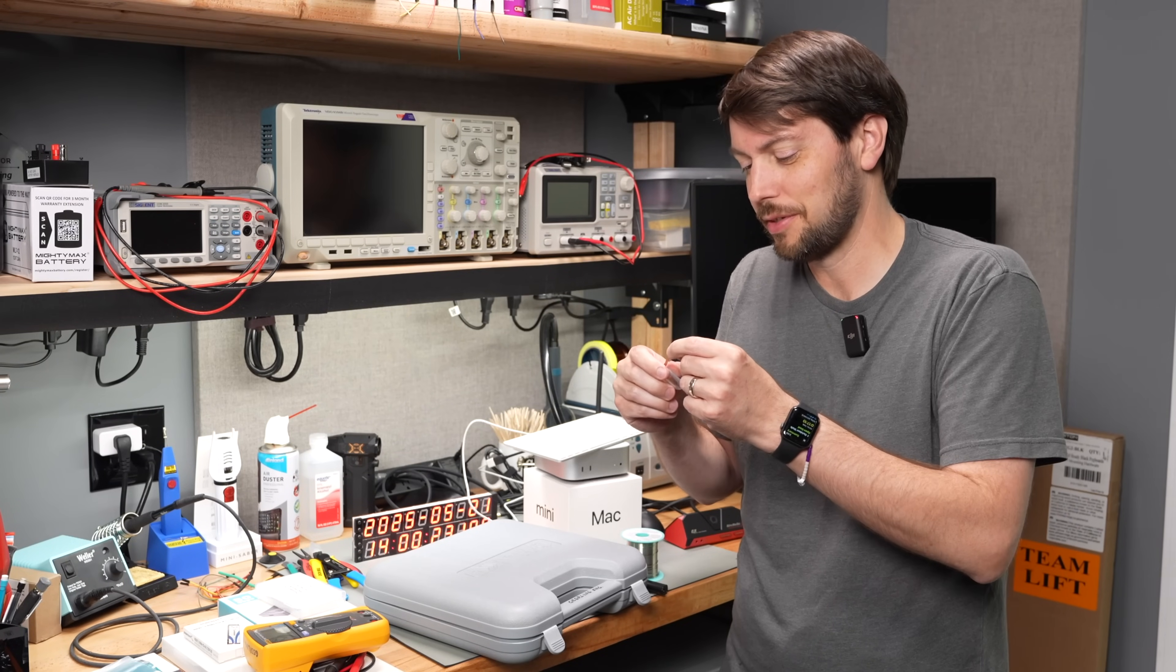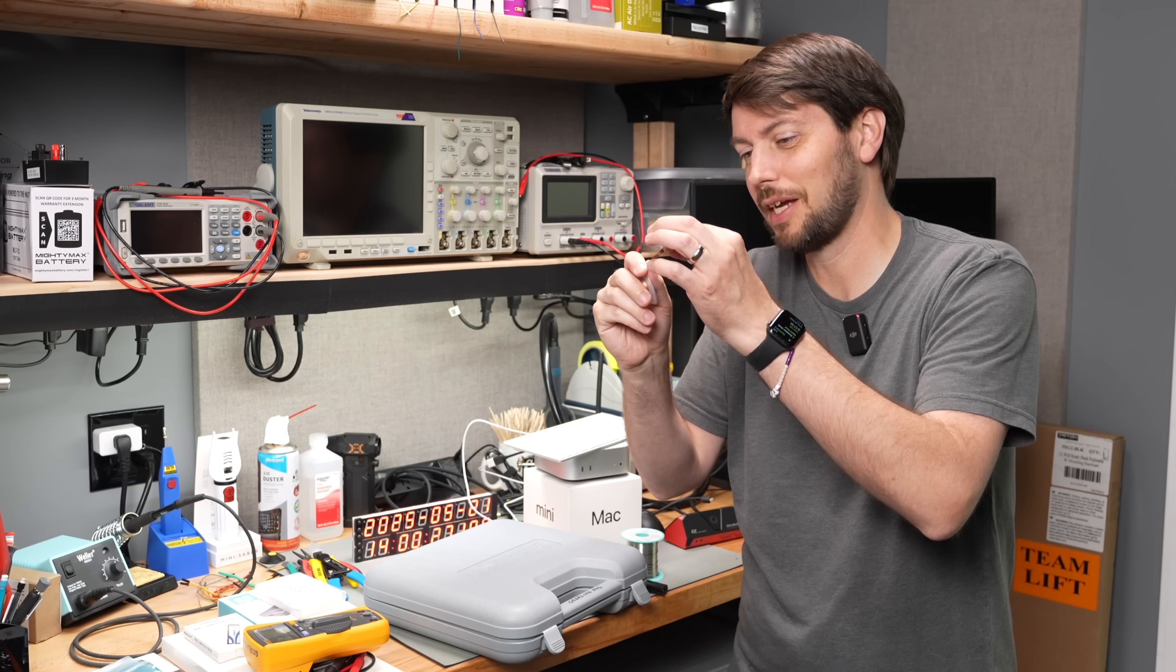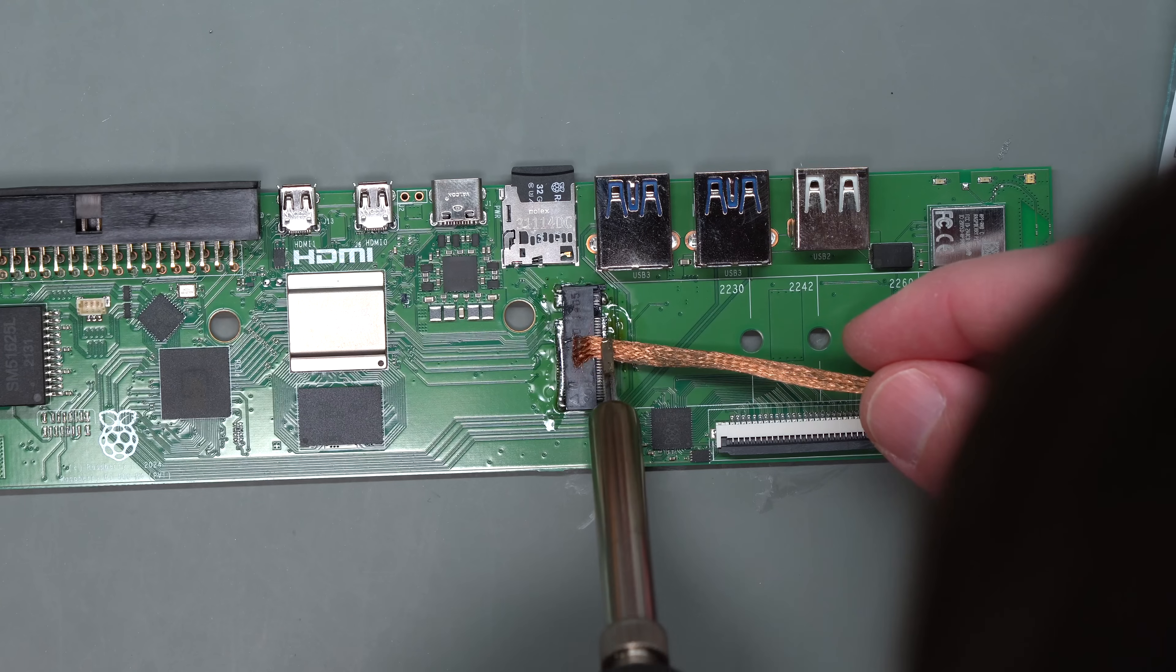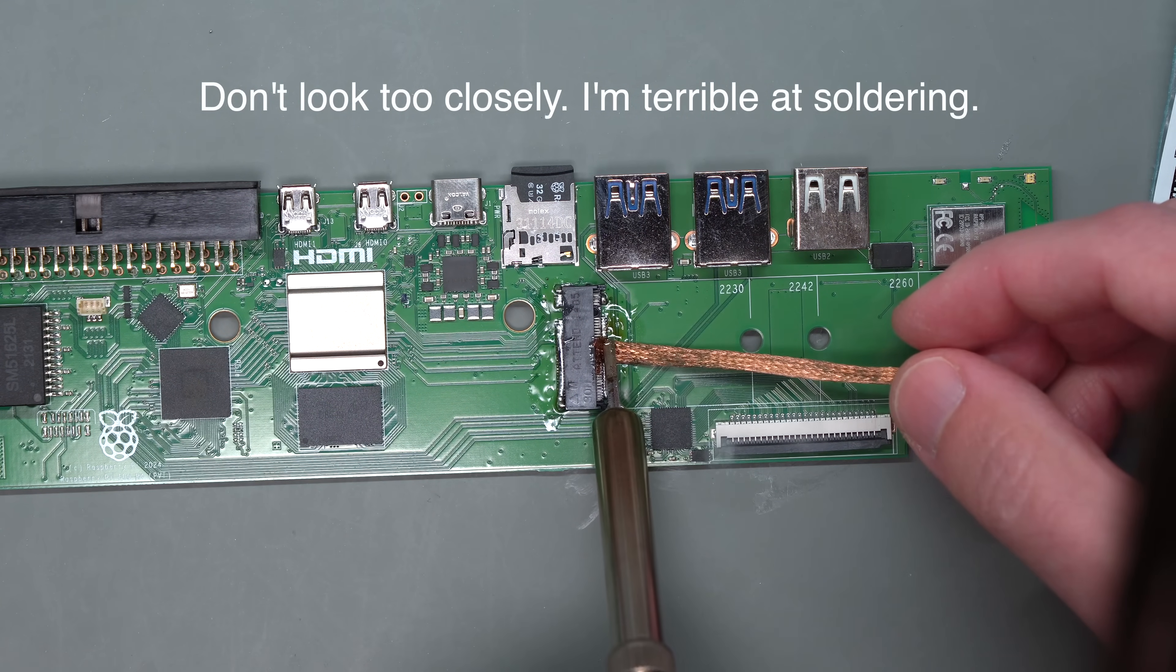If you ever need to repair anything with solder, you might know about solder braid. It's this little copper stuff that wicks solder away from something, and for my whole lifetime, since I was a kid when my dad first taught me how to solder...